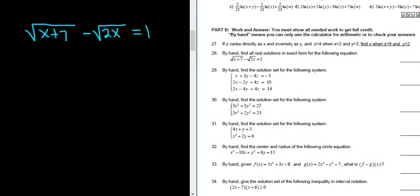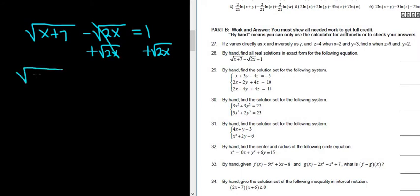We have an equation with two square roots. Whenever you have an equation with two square roots, you want to solve for one of the square roots and square both sides. We'll start by adding the square root of 2x to both sides, so these cancel. We have the square root of x plus 7 equal to 1 plus the square root of 2x.